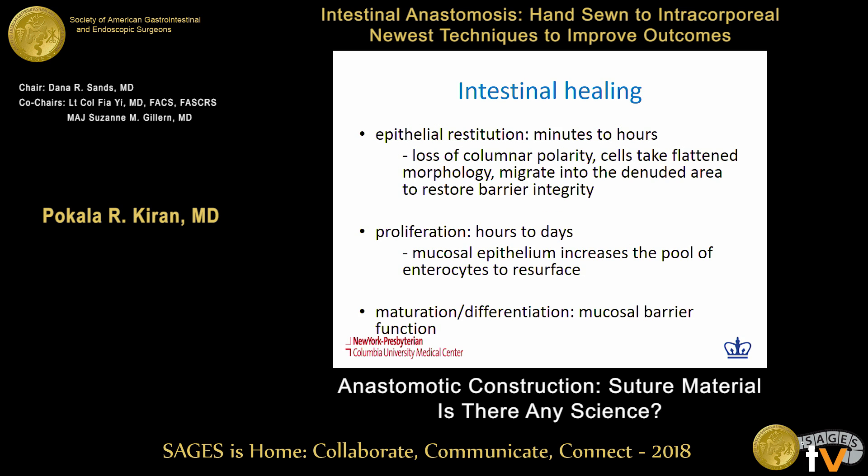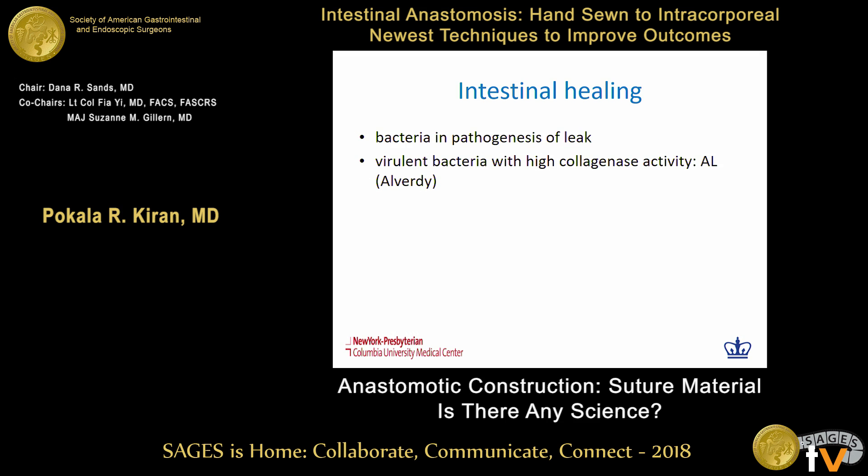Within minutes to hours of bowel injury, which typically occurs at the time of anastomosis, epithelial restitution occurs — the columnar cells lose their polarity, become flattened, and migrate into the renewed layer. Within hours to days, proliferation occurs to increase the pool of enterocytes, and then maturation and differentiation occurs to form a full barrier. These various processes can be disrupted by bacteria, and this has become more recognized recently with the work of Al-Verdi.